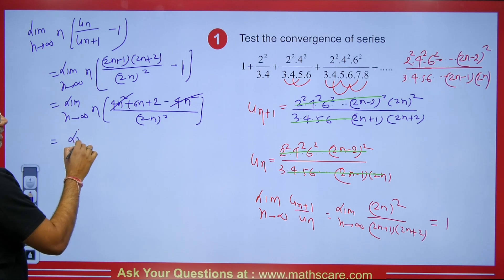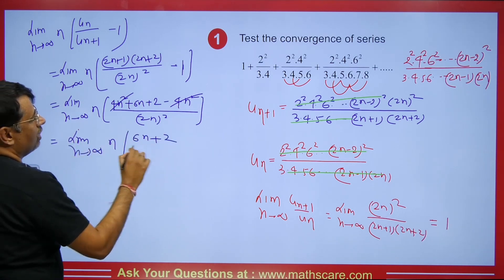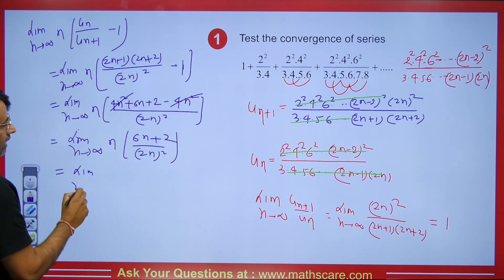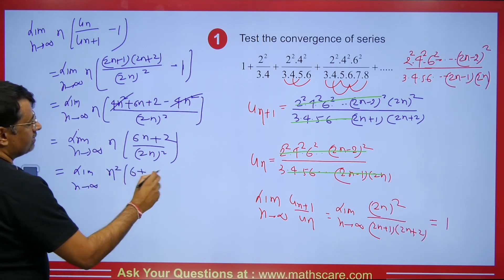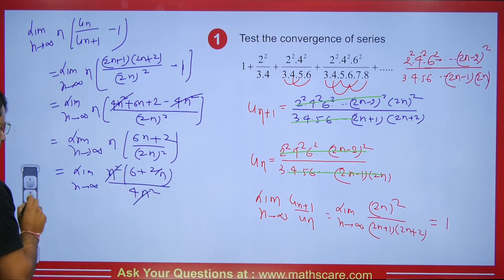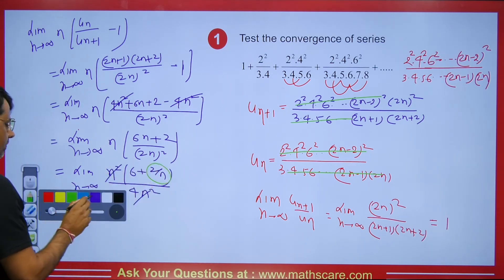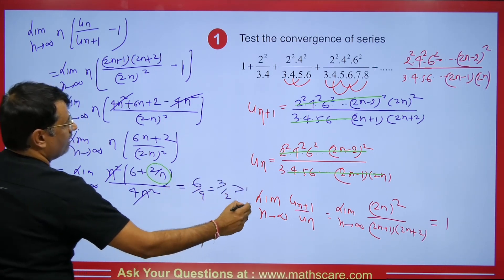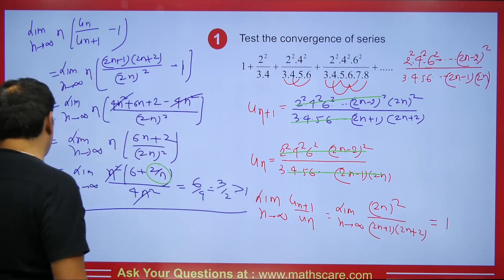After simplification, we have n times (6n + 2) / (2n)². Taking n common from numerator and denominator: n² cancels with n², and as n tends to infinity, the 2/n term vanishes. We get 6/4 = 3/2, which is greater than 1 — so the series is convergent.